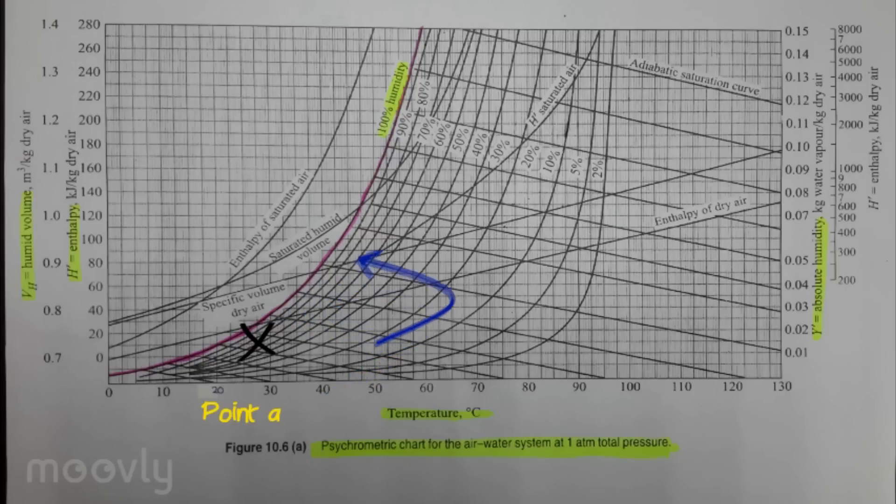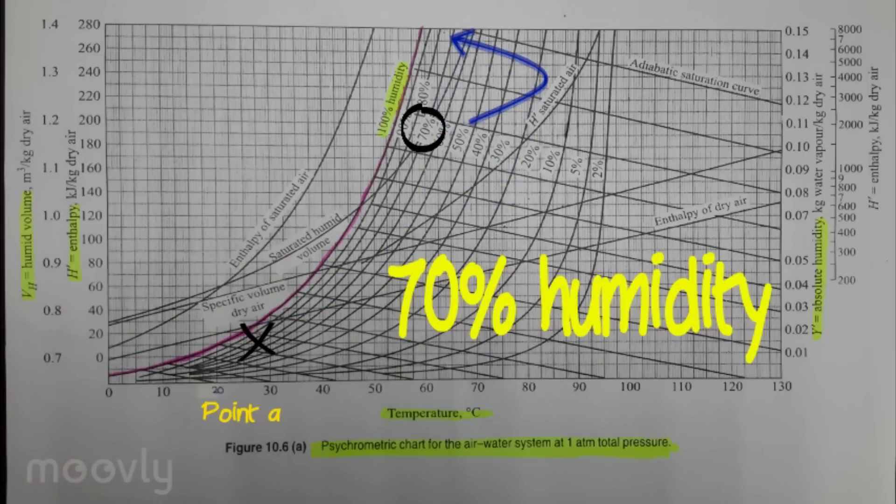Following the relative humidity line, point A falls on the 70% line.